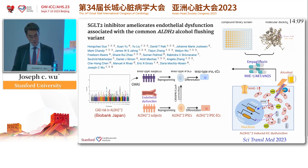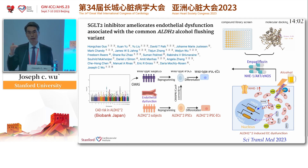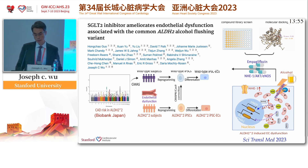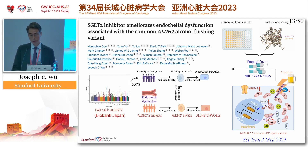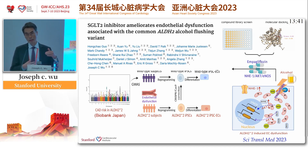And you could do CRISPR genome editing to confirm this — by taking patients with this enzyme deficiency and correcting it, or by taking a normal patient and adding this enzyme deficiency. And to make a very long story short, we did molecular docking analysis and came out with a hit: empagliflozin, an FDA-approved SGLT2 inhibitor. We showed the mechanism of how empagliflozin can be used to mitigate vascular dysfunction due to alcohol. A lot more information is contained in this paper here.